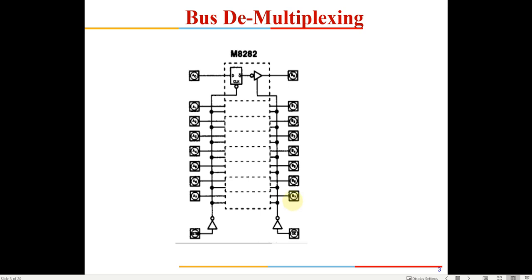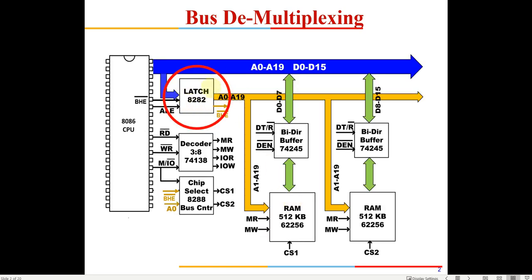This latch captures the address: whenever the Address Latch Enable signal goes high, the address is captured and kept, and then the line can be used in the next clock cycle for data transfer. We need to preserve the address line. The latch has 8 pins because it is a common latch available in the industry, not specifically made for the 8086. We use three such latches because we require 20 address lines plus one BHE line — total 21 lines.